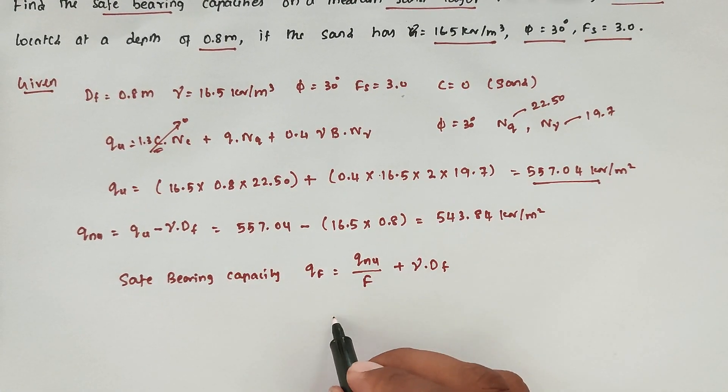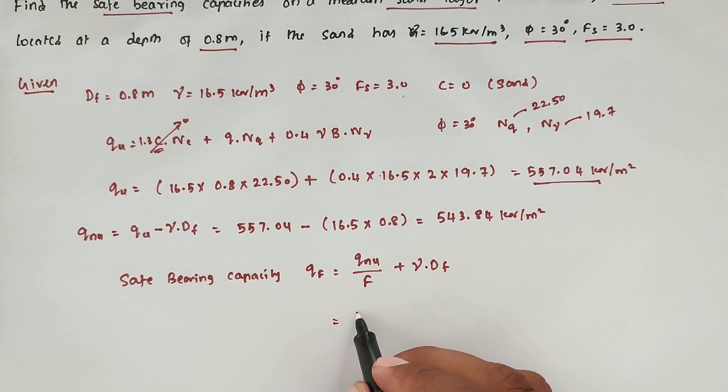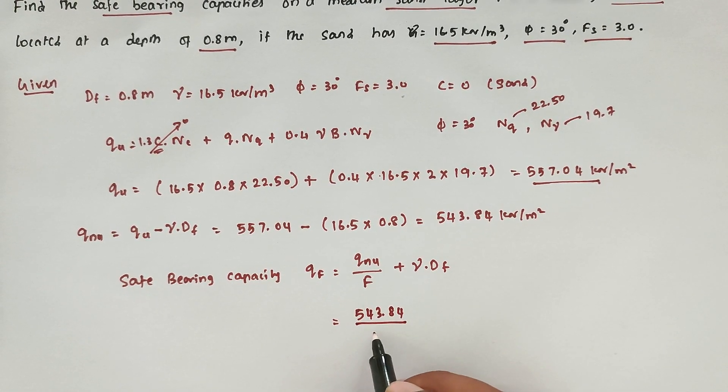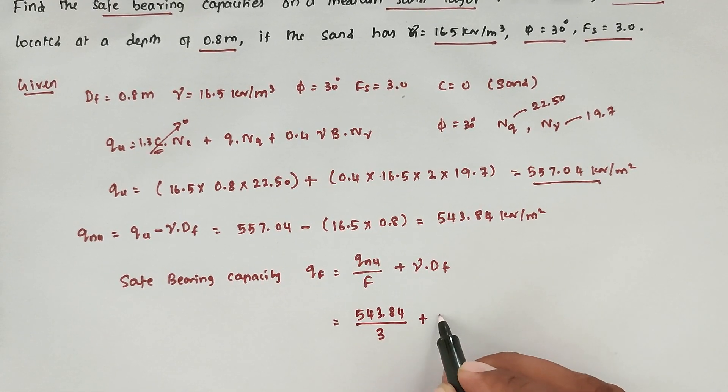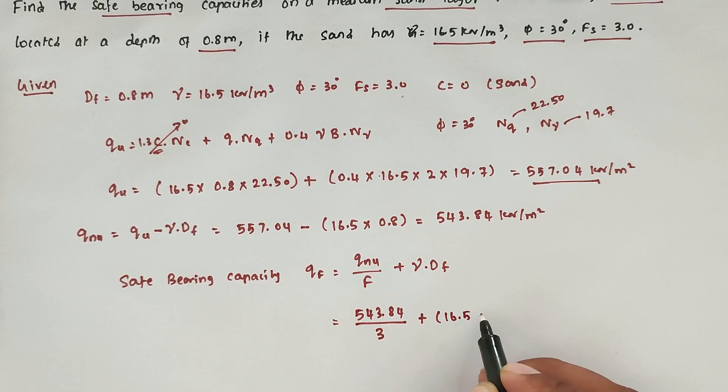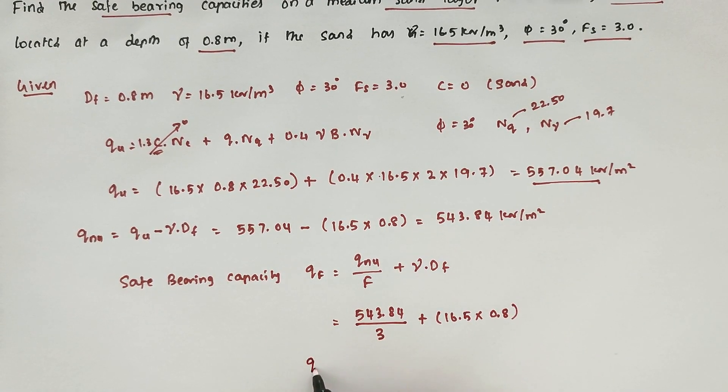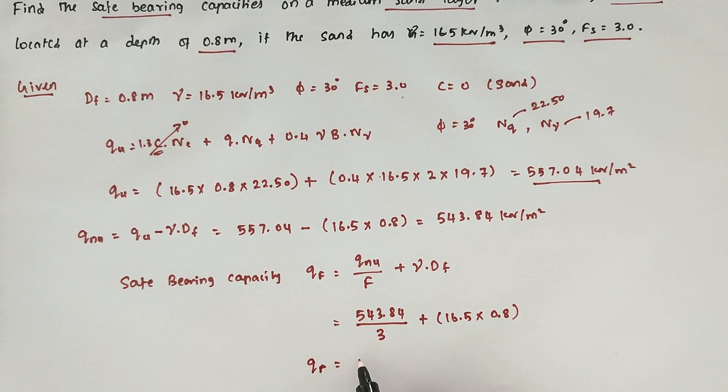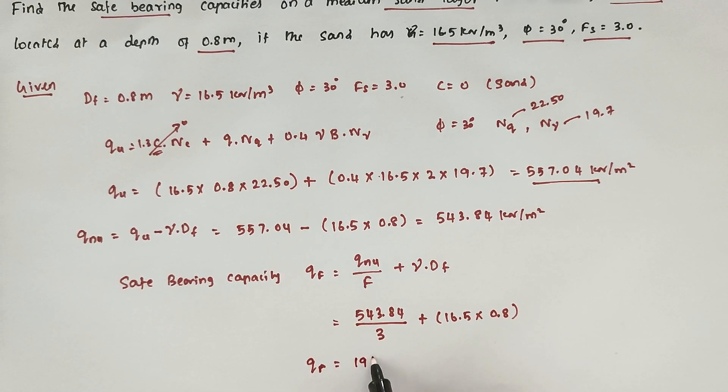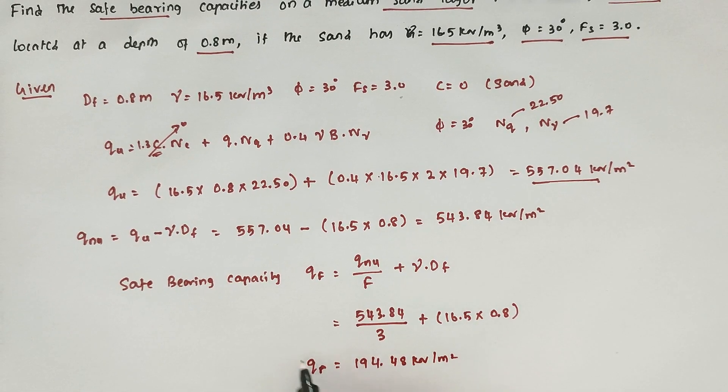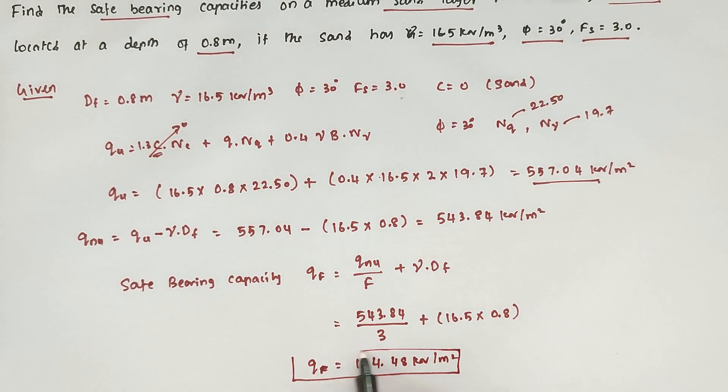Now we can substitute all the values: qnu is 543.84 divided by factor of safety that is 3, plus γ is 16.5 × Df 0.8. Solving this we get the value of qf = 194.48 kN/m². So this is the final answer.